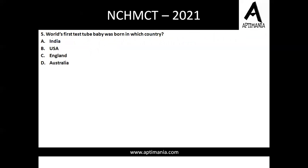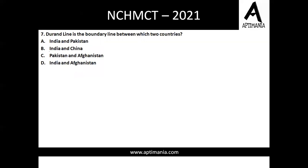Question five: the world's first test-tube baby was born in which country? England was the country where this happened — option C is the correct one. Question six: which scale is used to measure the intensity of an earthquake? The Richter scale is the correct answer, option C.